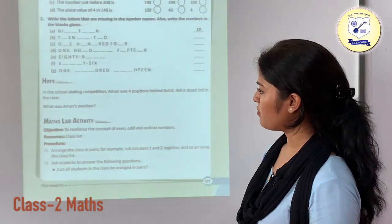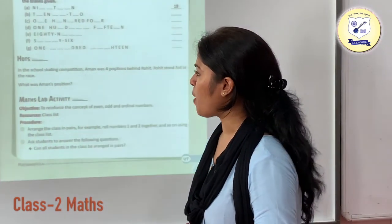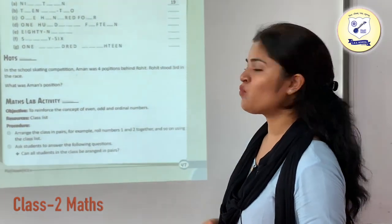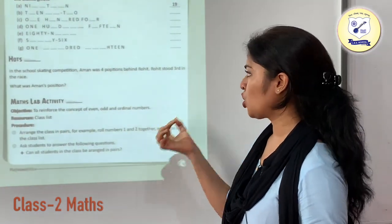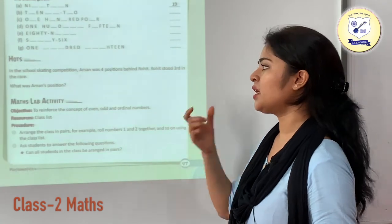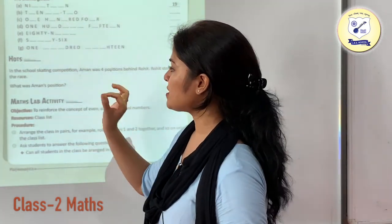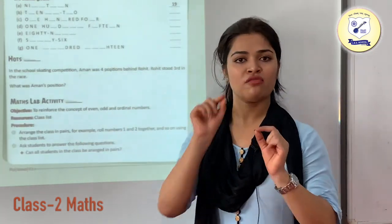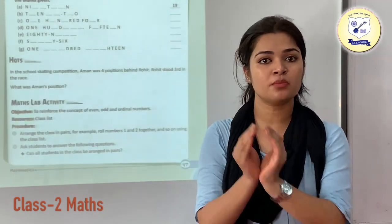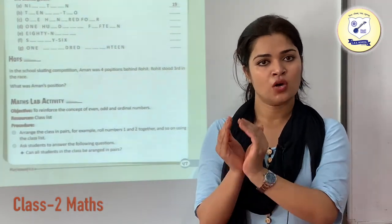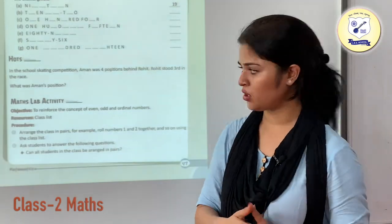Now we have a HOT question. In the school skating competition, Aman was on the 4th position behind Rohit. Rohit stood 3rd in the race. What was Aman's position? Since Rohit is 3rd and Aman is one position behind Rohit, Aman's position is going to be 4th.